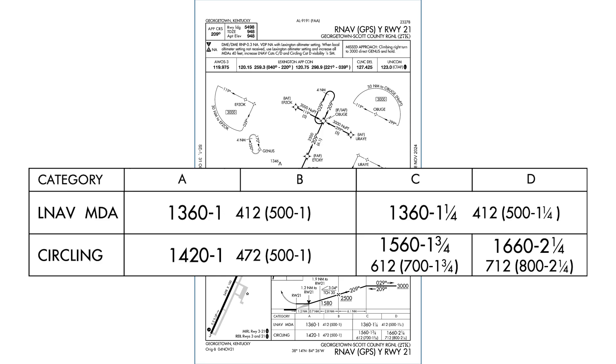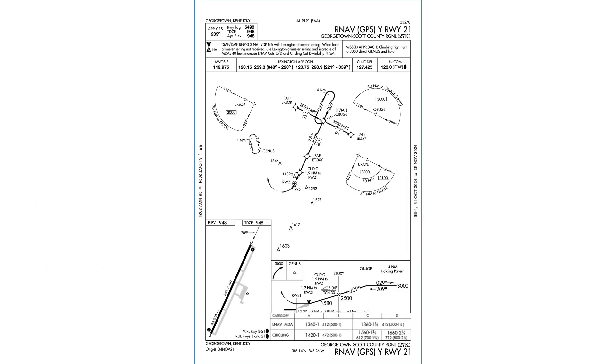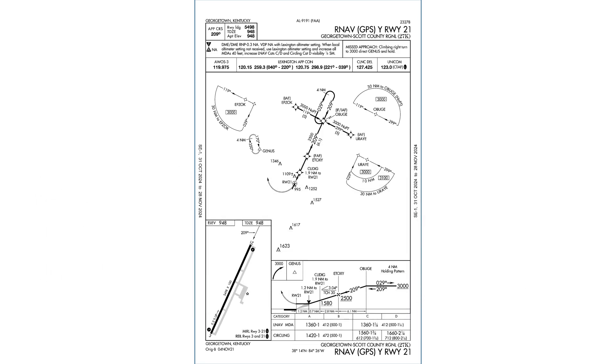The MDA is higher for all circling minimums. Circling approaches won't have VDPs because it's not possible to maintain a constant descent to land on a circling approach, but on approaches where the straight-in MDAs are different, the VDP is based off the lowest one.